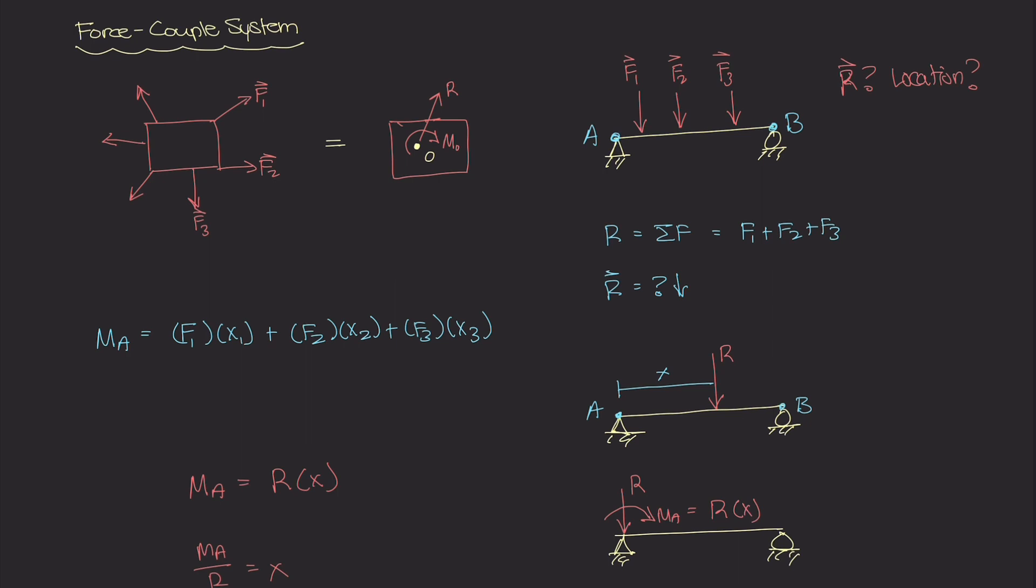I didn't really explain why this force couple system works, just what it was. So we know that if you have some body here and it's subject to all these external forces, we can study that set of forces and convert it to an equivalent force couple system, which is the resultant vector of all those forces and a moment. I told you that this is equivalent to this, but I didn't explain why.